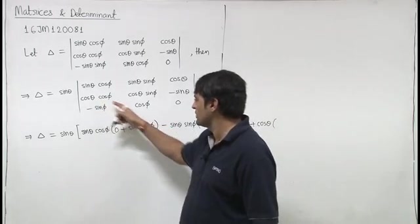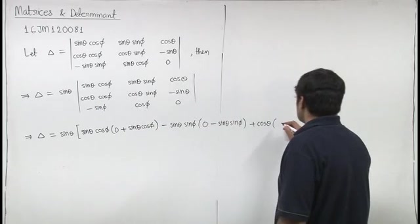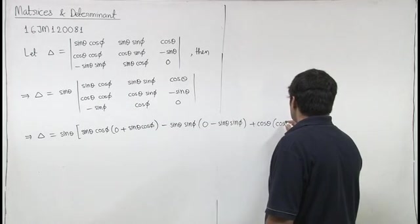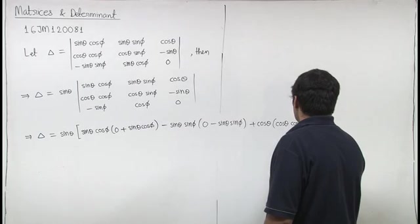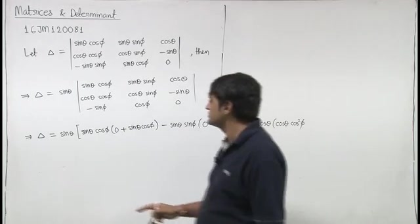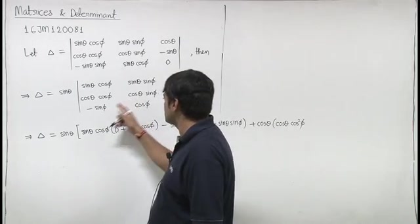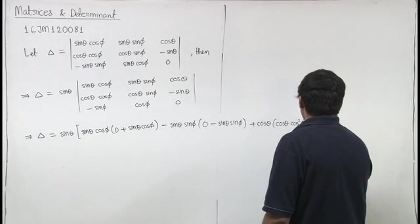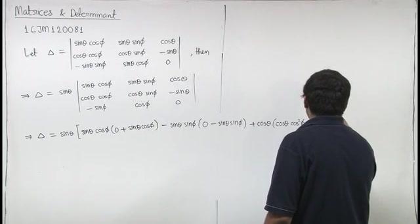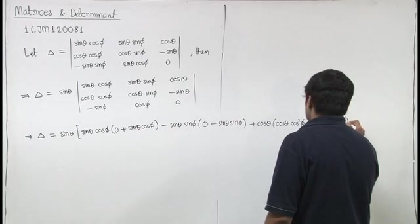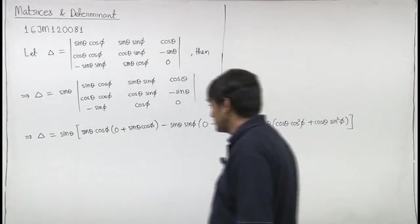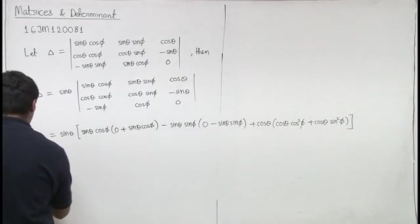Then we have cos theta cos square phi and it is minus plus cos theta sin square phi.